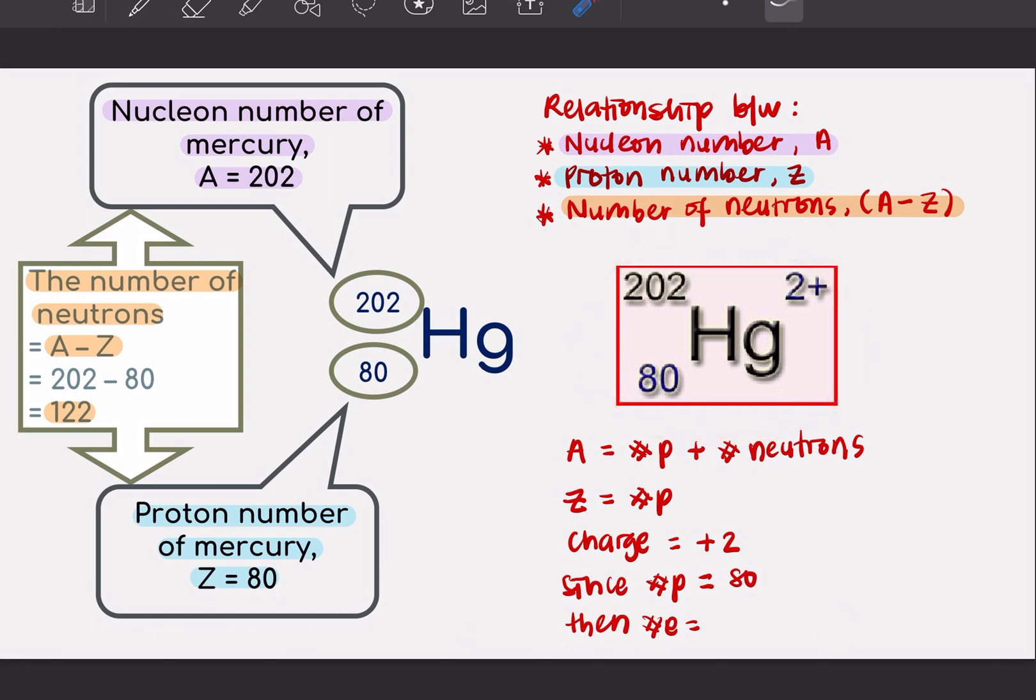On your right here pula, kalau awak tengok, ini sama. A sama, Z sama. Nucleon number dengan proton number sama dengan this atom. But you have something on your top right. What is this? Kalau awak ingat daripada sekolah menengah, this is actually your charge. So your charge will actually tell you the number of electrons.